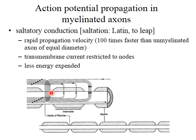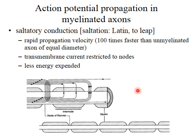This process of the action potential jumping from one node to the other is called saltatory conduction — that's the name we give to propagation in myelinated axons. The term saltatory conduction comes from the Latin, which means to leap or to dance. So the action potential is leaping, or perhaps dancing, from one node of Ranvier to the next.